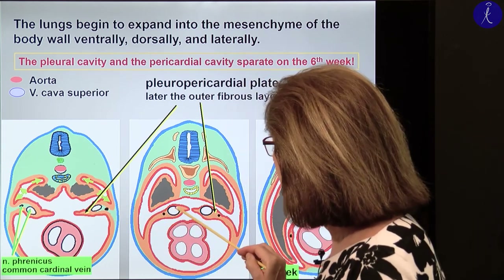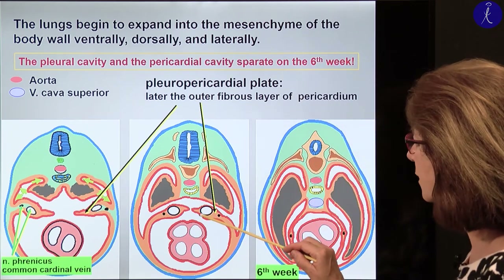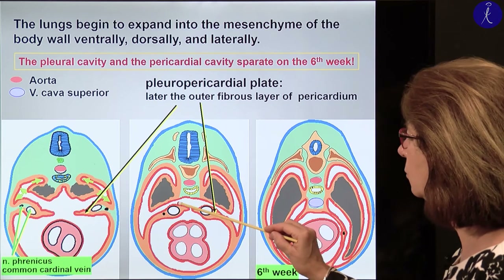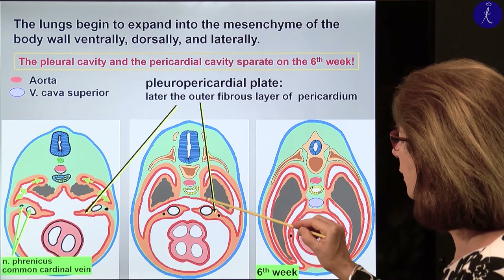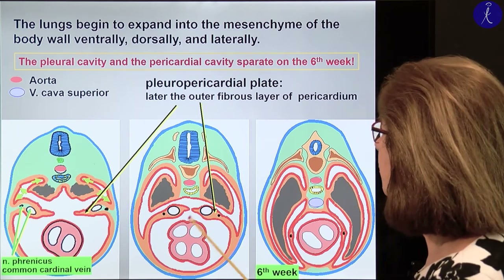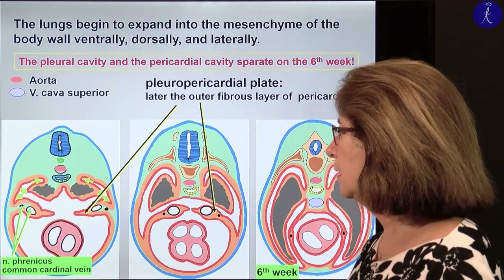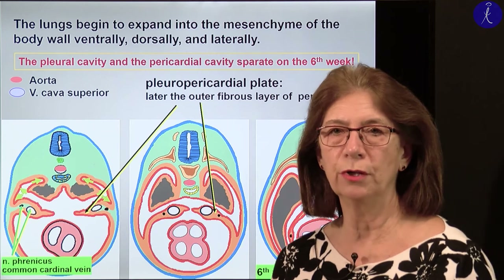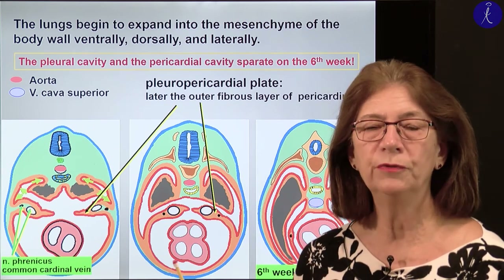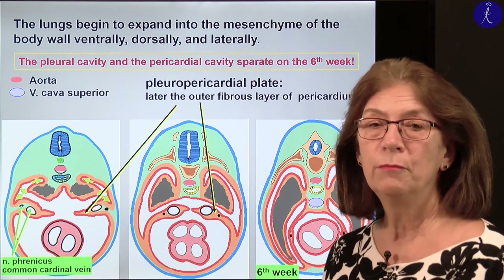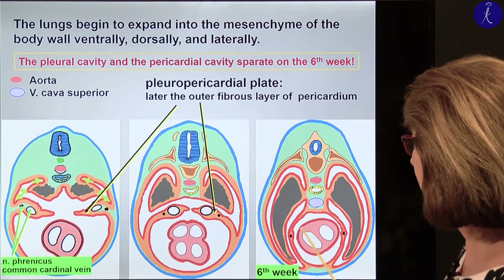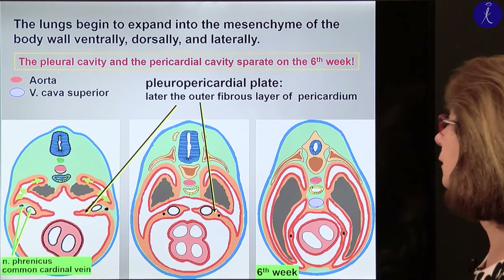Major blood vessels return to the heart, like the common cardinal vein (ductus of Cuvier). As this vessel returns to the heart, it pulls in from the lateral body wall a plate called the pleuropericardial plate — the name says it separates the pleural cavity from the pericardial cavity. This plate pulls in, gets closer and closer, and finally these two layers unite. With this, the pericardial sac gets separated from the pleural cavities, and these two other plates also unite — not with each other but with the visceral plate of the lungs — giving two separate pleural sacs. Embedded in the pleuropericardial plate is also the phrenic nerve, which runs between the fibrous layers of the pleura and the pericardium — the fibrous layer of the pericardium being thicker with a closer relationship to it.